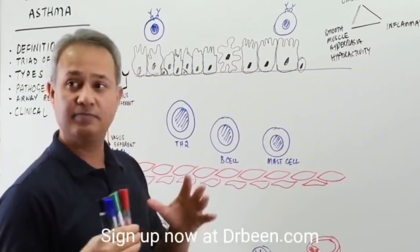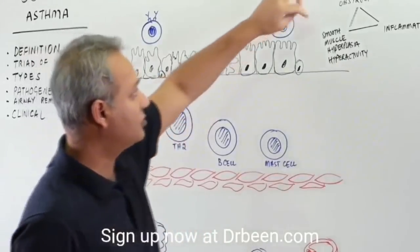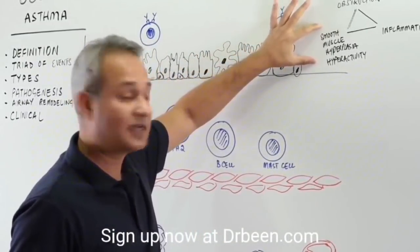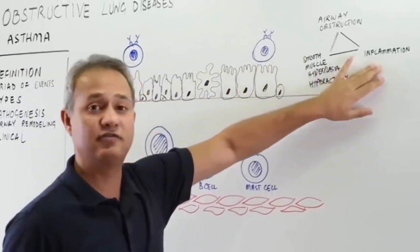So when you are looking at the pathogenesis or pathology of asthma, you have to figure out how will you cause airway obstruction? How would you look at smooth muscle hyperplasia and hyperactivity, which is called bronchospasm, and how would you cause inflammation?